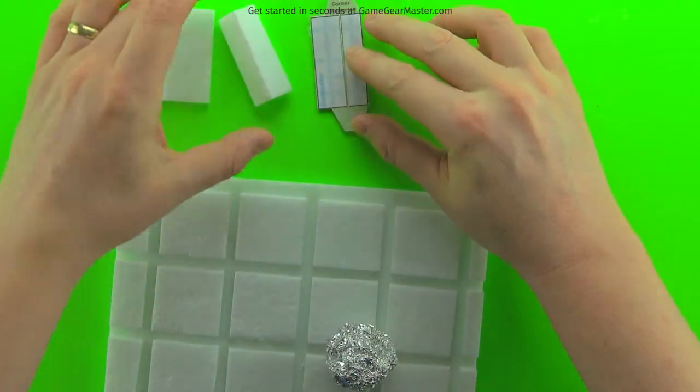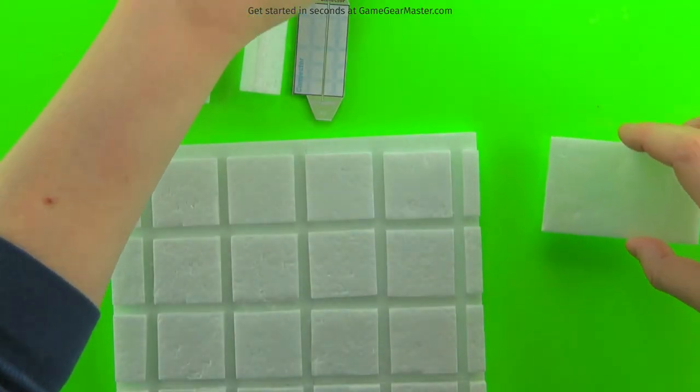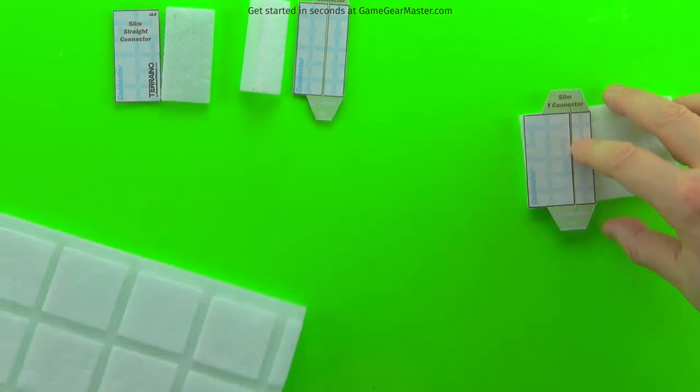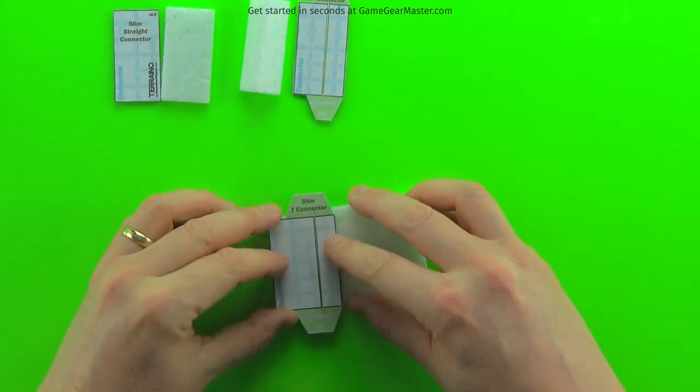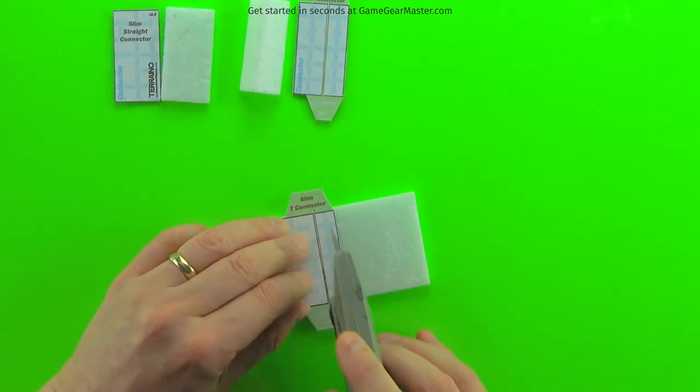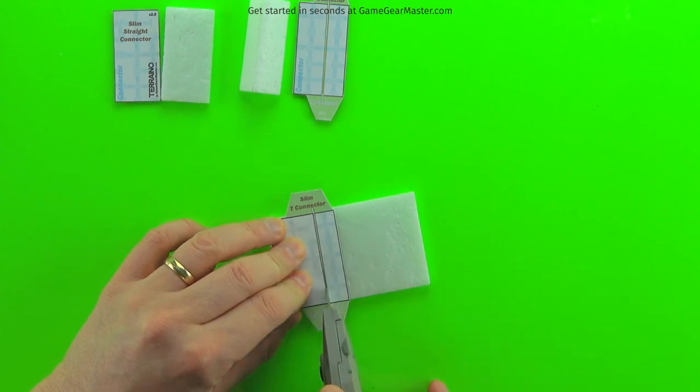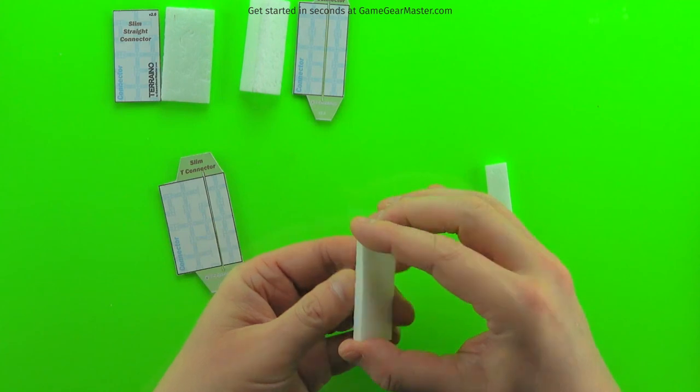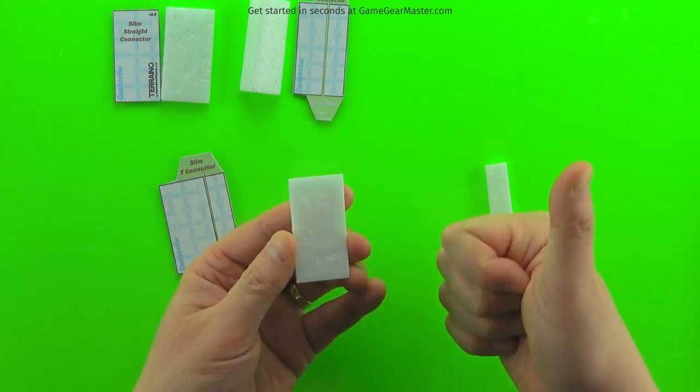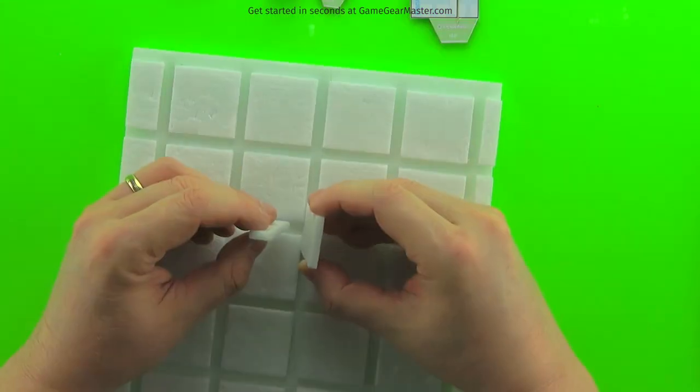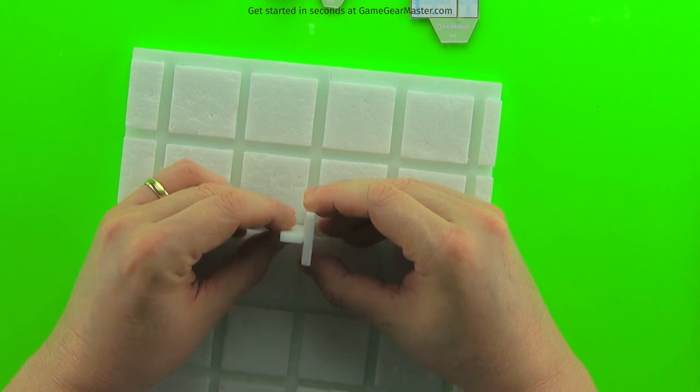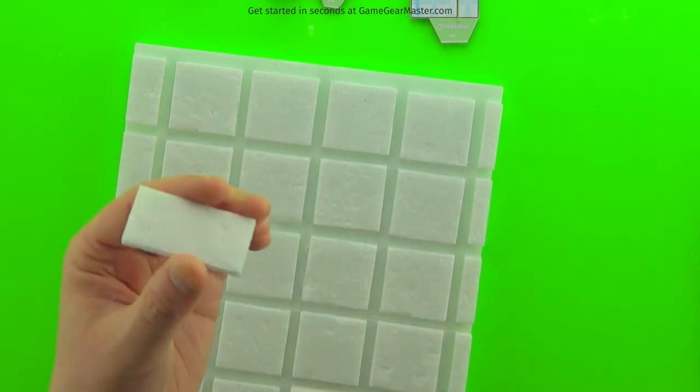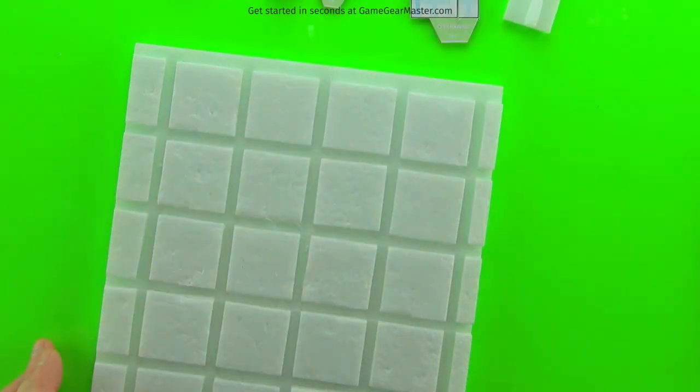Last but not least is the slim T connector, which is also just two pieces of foam glued together like a T. Just make sure that the texturing is on the outside of the T. And that does it for all the connectors.